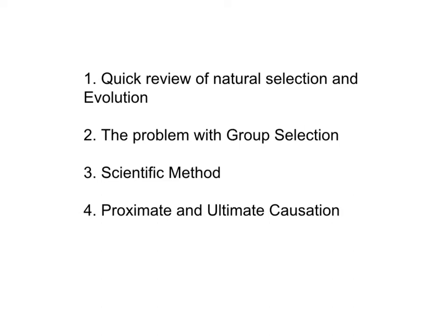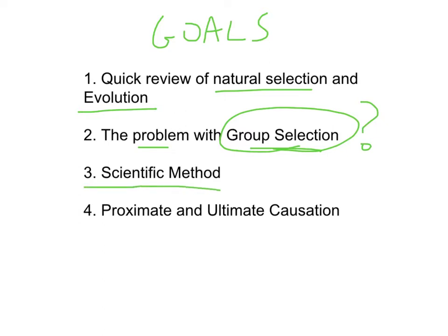Welcome back class. This lecture has a few different goals to it. We're going to do a quick review of natural selection and evolution. Then I'm going to talk a little bit about the problem with group selection, as in does it really ever exist? I'll tell you the answer now, that's no. I'm going to go over scientific method a little bit. And finally, a big thing that I want you to learn today is something called proximate and ultimate causation.